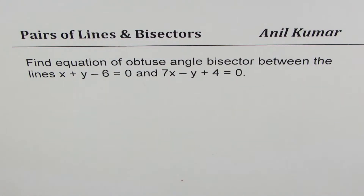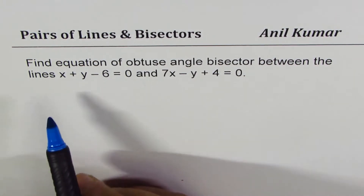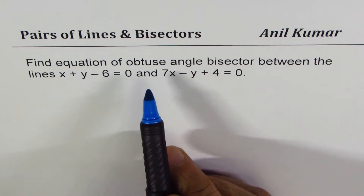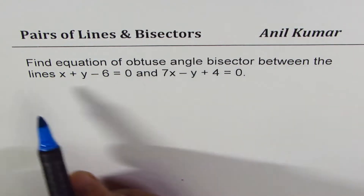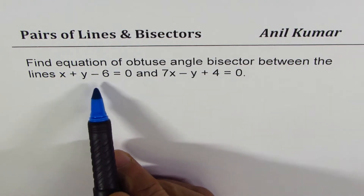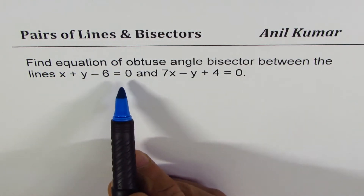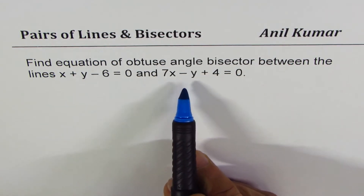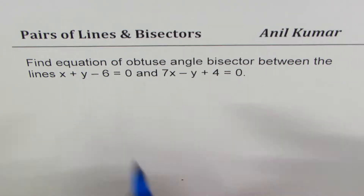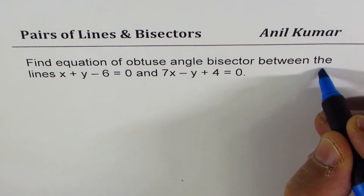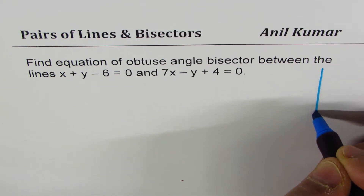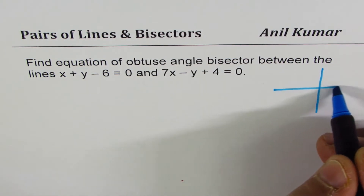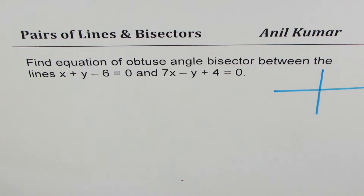I'm Adil Kumar sharing with you a video on pairs of lines and bisectors. The question here is to find the equation of the obtuse angle bisector between the lines x plus y minus 6 equals 0 and 7x minus y plus 4 equals 0. Let's try to understand the situation — I'll roughly sketch the lines.